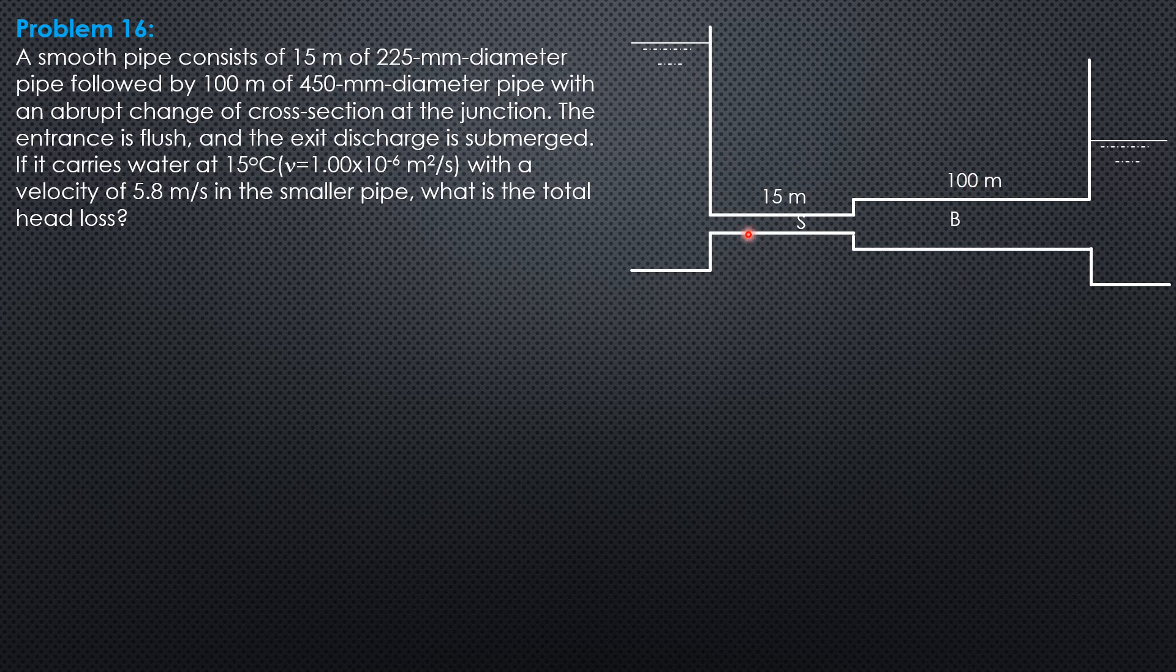We have flush entrance and submerged exit. So K here is 0.5 and submerged exit is 1. Aside from friction loss in the smaller, friction loss in the bigger, and this sudden enlargement, which is quantity Vs minus Vb squared over 2g, the head loss.